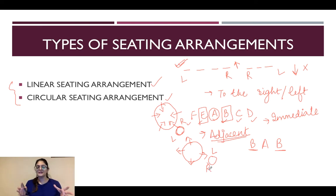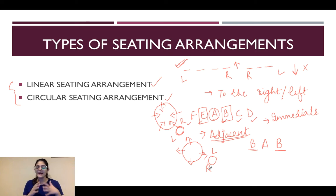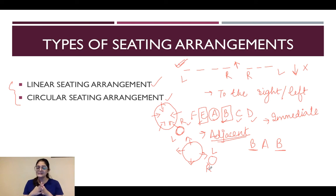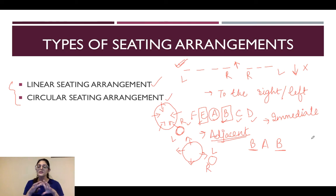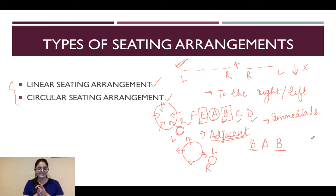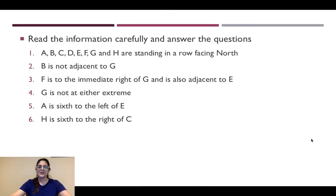The gist of all of this is that the sense of direction is extremely important. These questions are pretty easy to understand and solve, unless they are some high-order or extremely difficult questions. In a general sense, seating arrangement questions are pretty easy — only if you understand these words and are very sure about directions. This is absolutely all the basic requirement and knowledge that you need. Now let's get to some practical examples and solve a few questions from linear and circular seating arrangements.